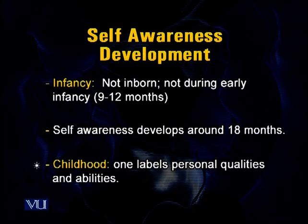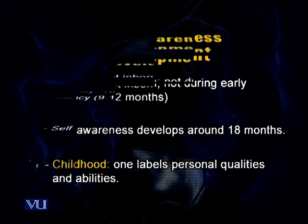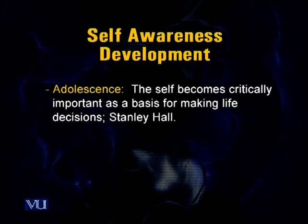Then the childhood period comes. In childhood, one can learn to label personal characteristics, qualities, and abilities. Children can understand and talk about their personal qualities — if you call a child bad, the child says, 'No, I am good.' So the child has developed a concept of 'me' and 'I' as an active agent, and self-awareness also develops. That is the 'me' part of self.